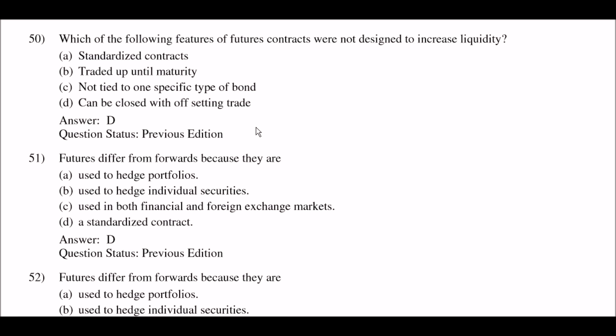Question number 50: which of the following features of futures contracts was NOT designed to increase liquidity? Option A: standardized contracts; option B: traded up until maturity; option C: not tied to one specific type of bond; option D: can be closed without settling the trade. The right answer is option D: can be closed without settling the trade.